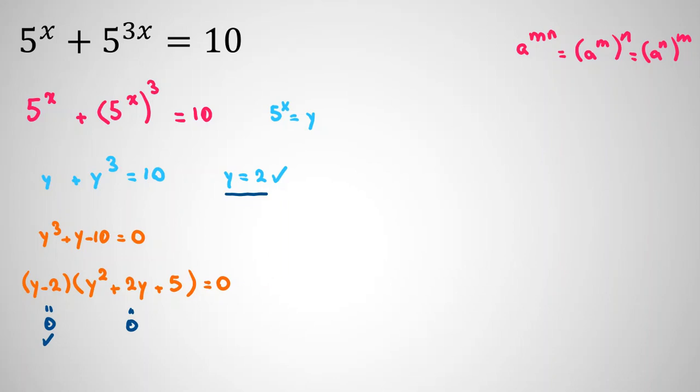Second term equals 0. Then, we conclude y squared plus 2y plus 5 equals 0.